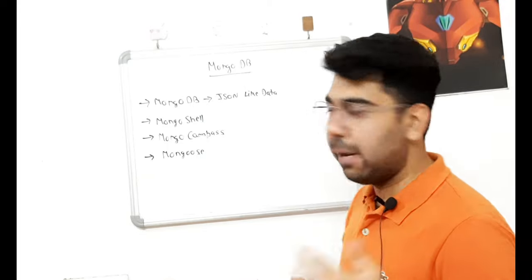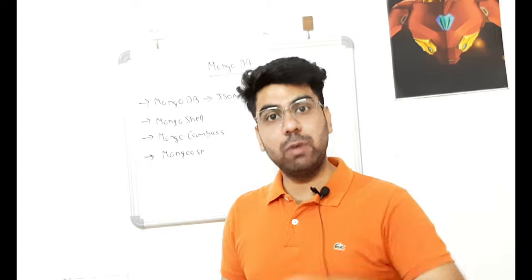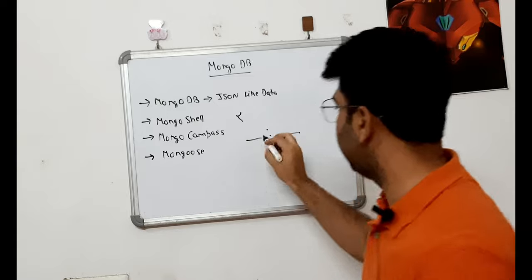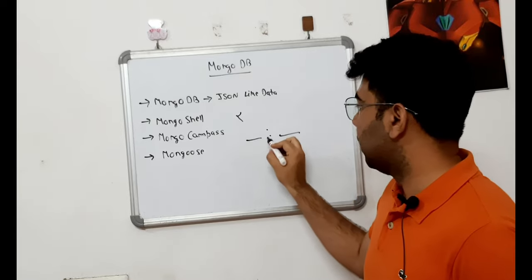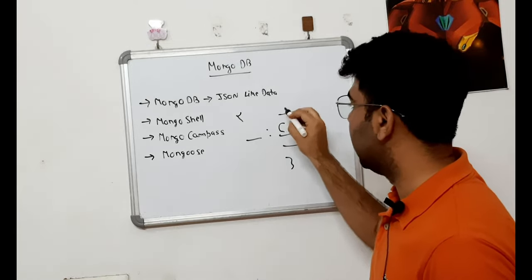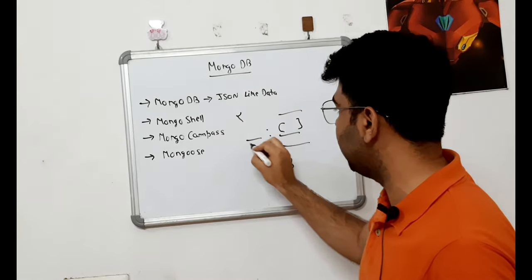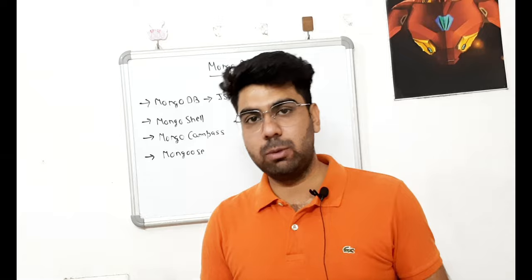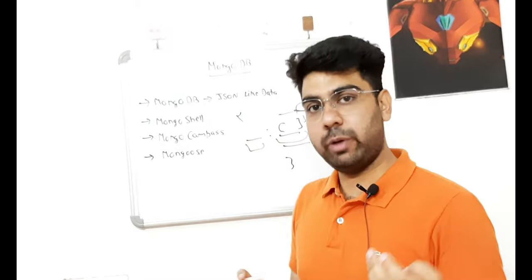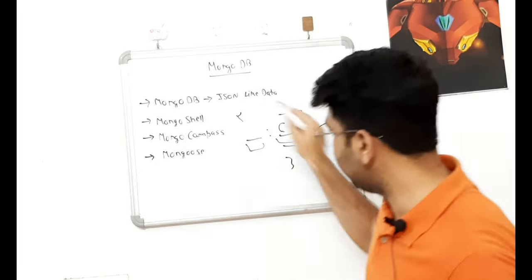JSON is an object — it's a key-value pair. In this key-value pair, the value can be a number, a string, or a name. So it's a key-value pair. In SQL, data was stored in the form of tables with rows and columns. But in MongoDB, data is stored as objects in JSON structure, so we call it JSON-like data.